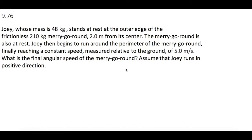Joey, whose mass is 48 kg, stands at rest at the outer edge of the frictionless 210 kg merry-go-round, 2 meters from its center. The merry-go-round is also at rest. Joey then begins to run around the perimeter of the merry-go-round, finally reaching a constant speed relative to the ground of 5 meters per second. What is the final angular speed of the merry-go-round? Assume that Joey runs in positive direction.